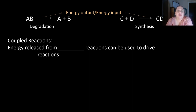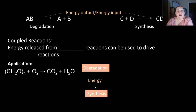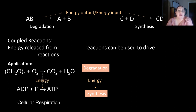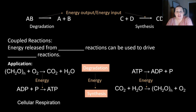Energy released from an exergonic reaction can be used to drive an endergonic reaction. When a degradation reaction releases energy, that energy is used to synthesize or build something else. For example, sugar and oxygen are broken down into CO2 and water — that energy released helps make ATP, which is cellular respiration: a degradation reaction fueling a synthesis reaction. Conversely, ATP being broken down into ADP and a phosphate releases energy that can drive synthesis reactions like photosynthesis.